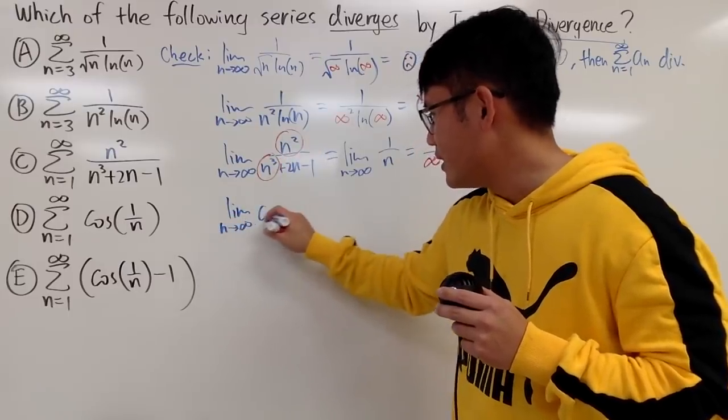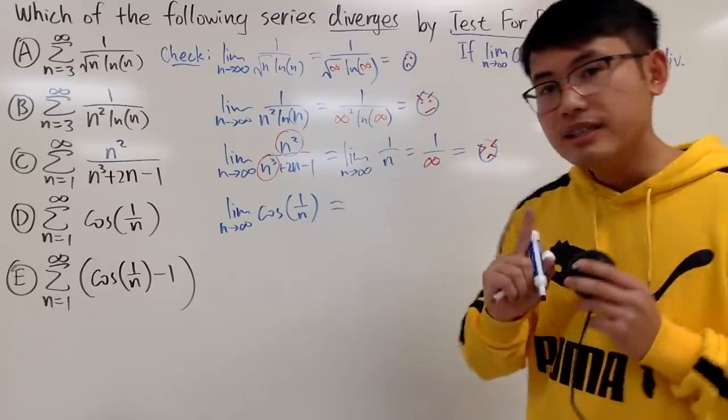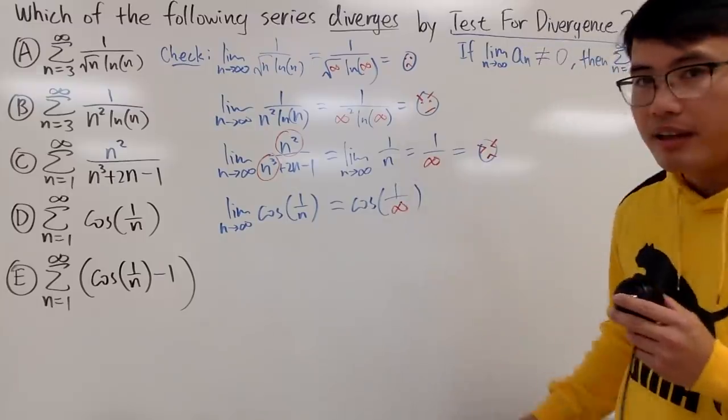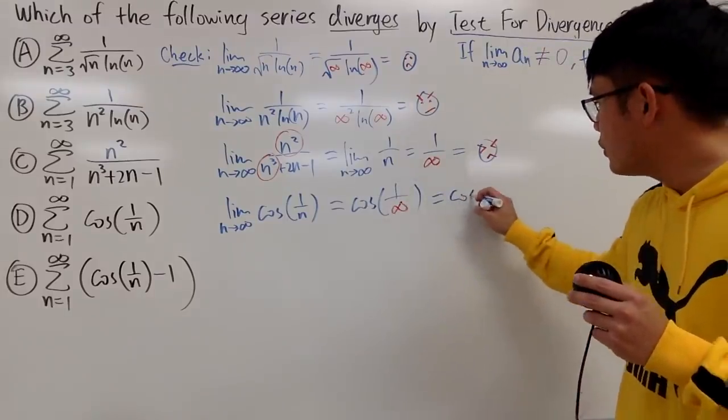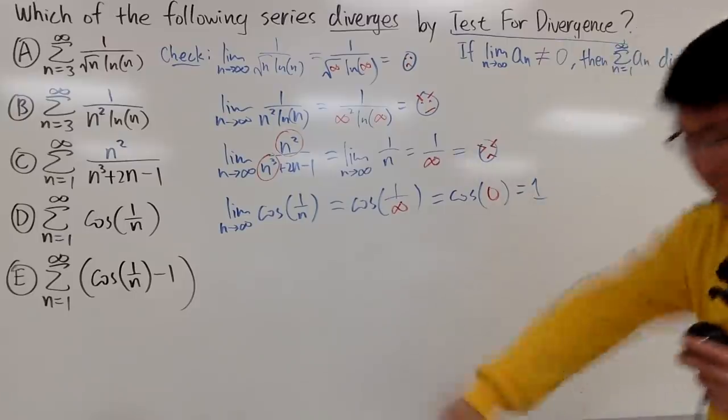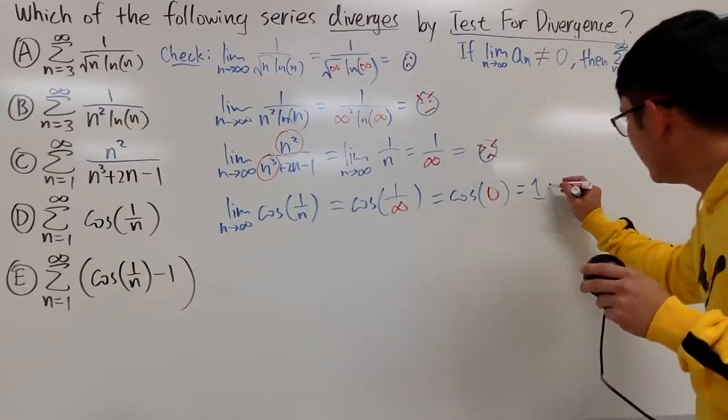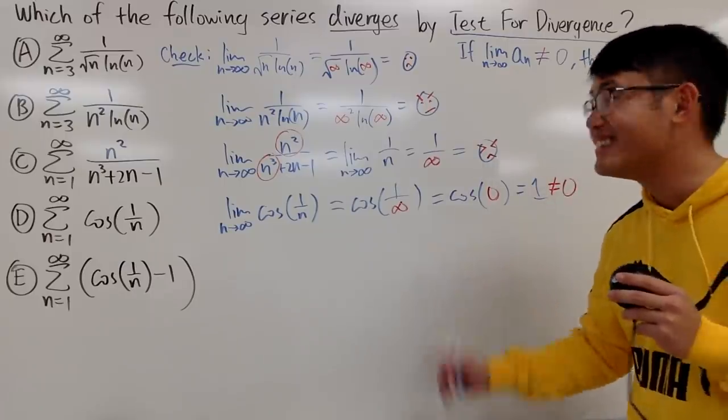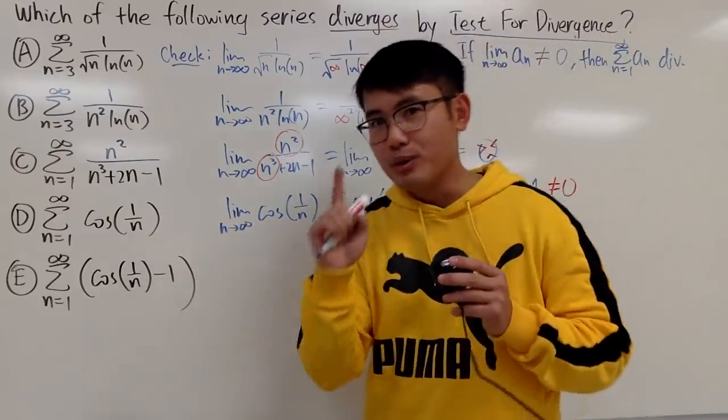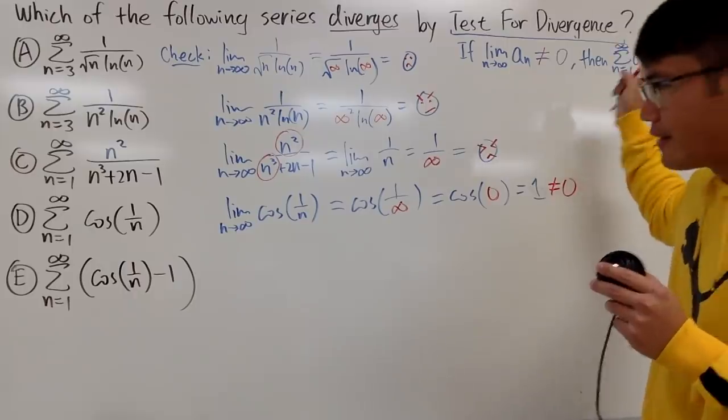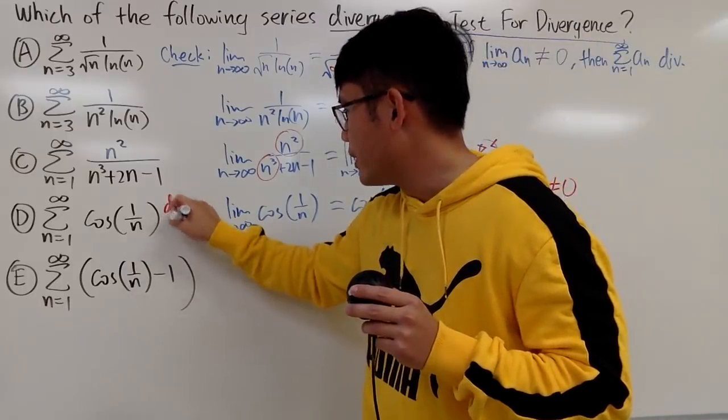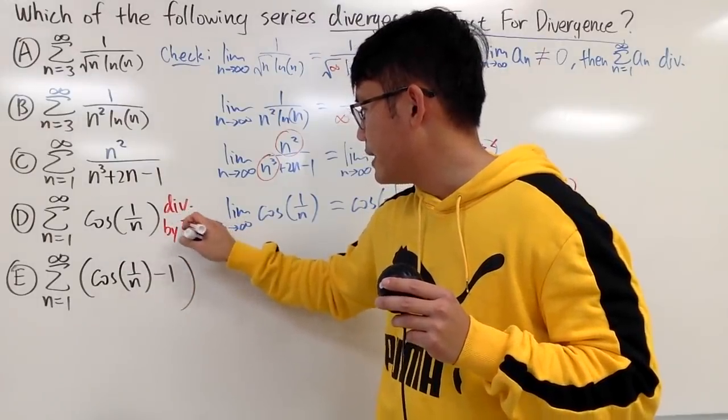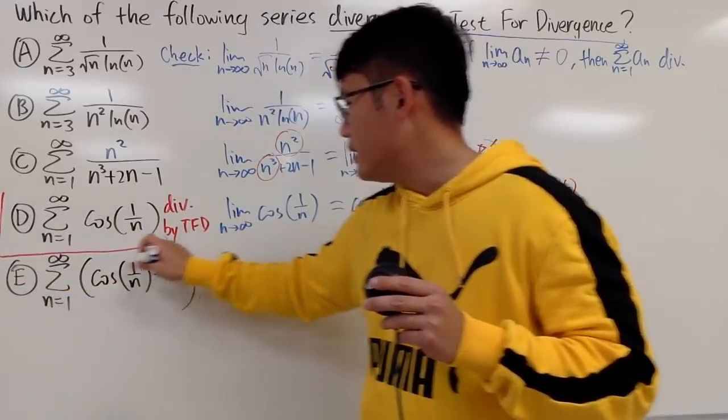Limit as n goes to infinity of cosine of 1 over n. This time, we put the infinity in here. We have cosine of 1 over infinity. 1 over infinity is 0. So this is cosine of 0, which is 1. Yes! Because 1 is not 0. So this right here, we are good, right? So this right here, we get to do a conclusion by the test for divergence. So let me just write here. We can say this right here, diverges by TFD. So D is the answer.